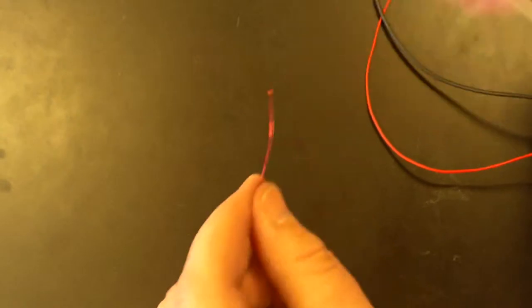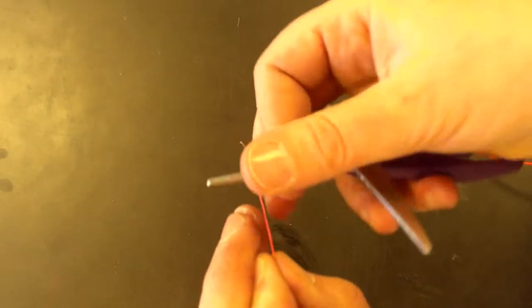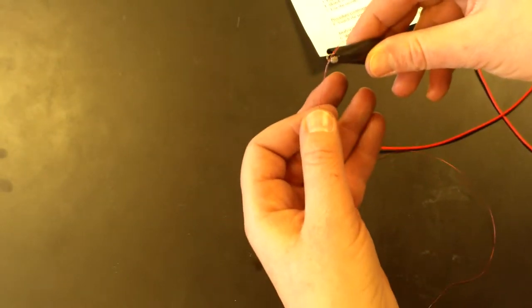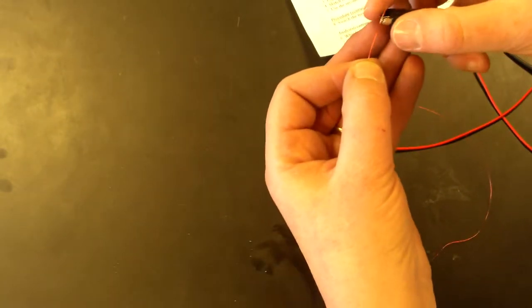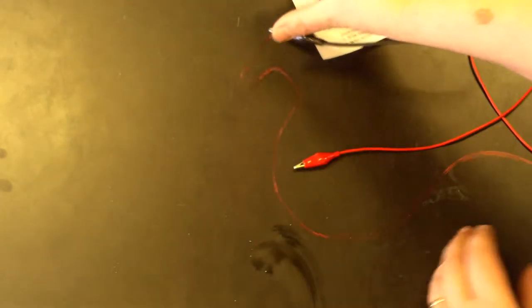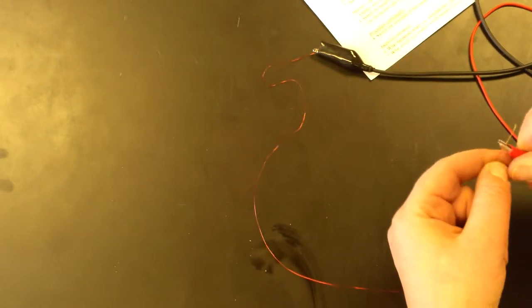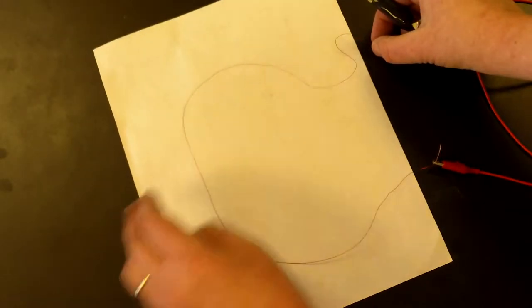Then I'm gonna hook this up to my power supply here. I've got these cords connected to the power supply. Turn it on, there's very little resistance here. I'm gonna put this white paper underneath it so you can see it better.